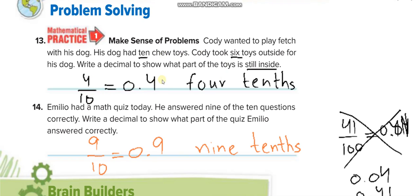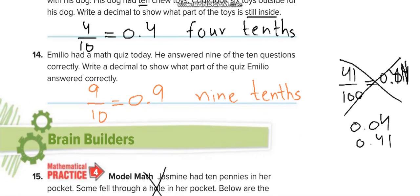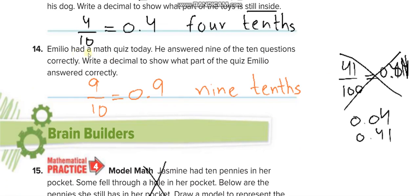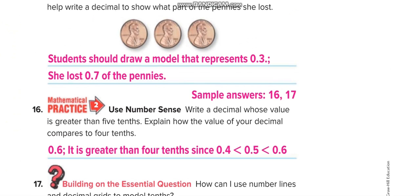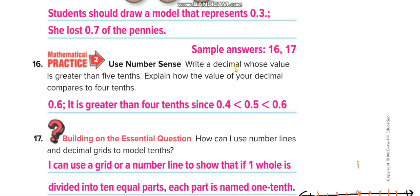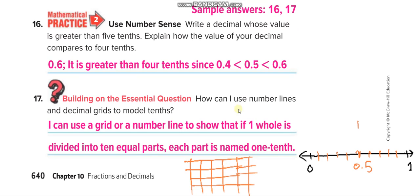Emilio had a math quiz today. He answered nine of the ten questions correctly, so nine over ten, 0.9, nine tenths. This question involves some money. Write a decimal whose value is greater than five tenths. Explain where. 0.6 is greater, or 0.7, 0.8, like that. And here's some explanation.